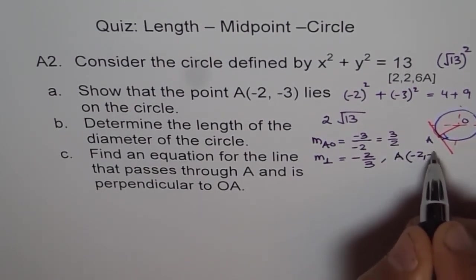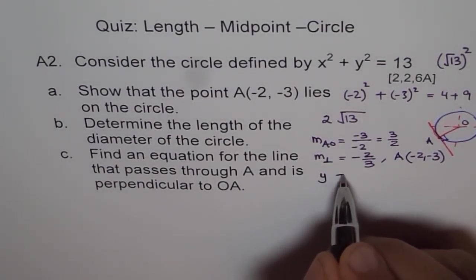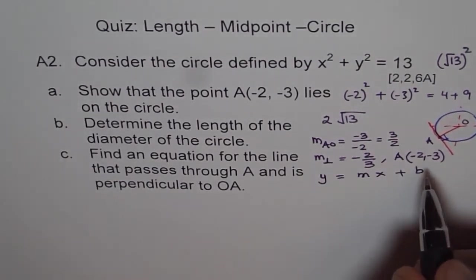And the point it is going through is A. Minus 2, minus 3. What should be the equation? The equation you could write as, let the equation be y equals to mx plus b, right? Where y is, you can put this point, x and y.